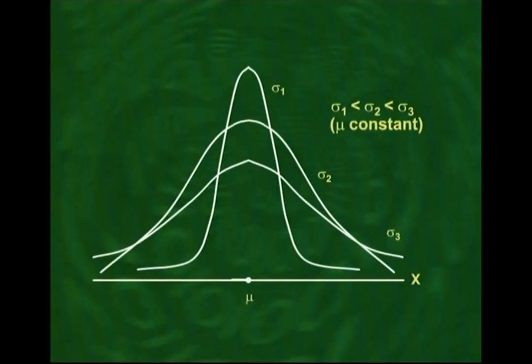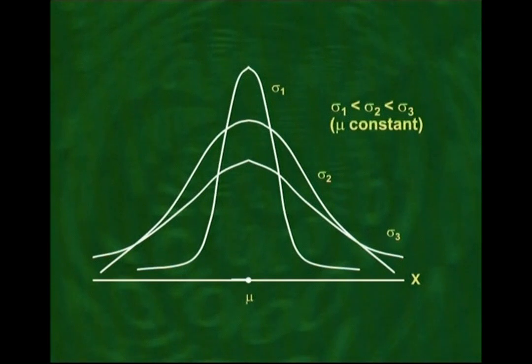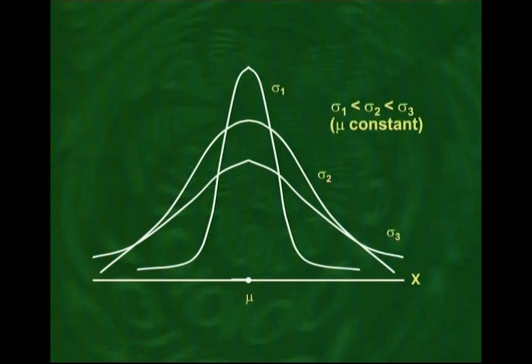Now, what happens to the normal distribution if mu is kept constant but sigma changes? If we have three normal distributions with identical mean mu but different standard deviations sigma1 < sigma2 < sigma3, then the one with the smallest standard deviation is the tallest and narrowest, and the one with the largest standard deviation is the widest and least peaked.